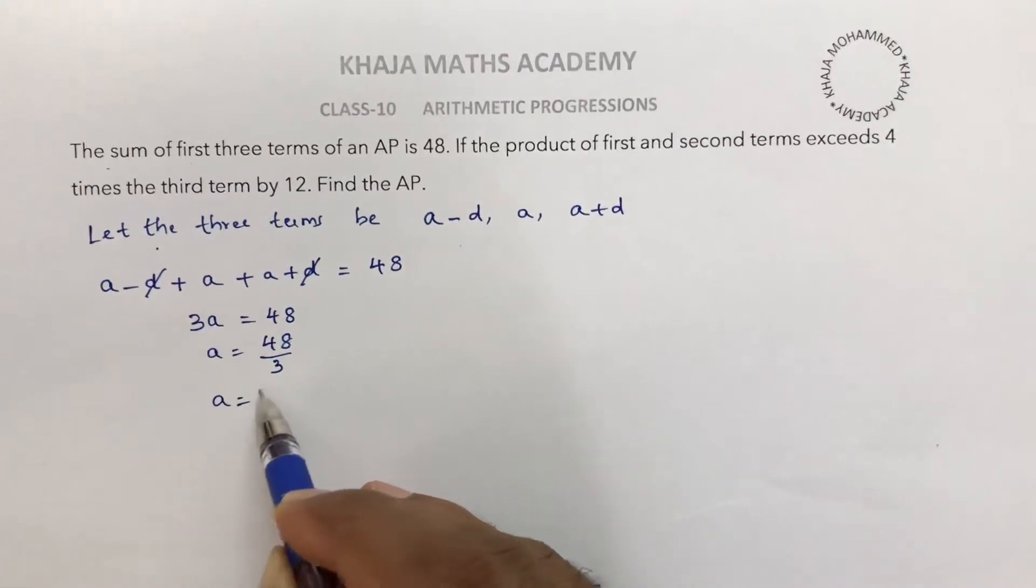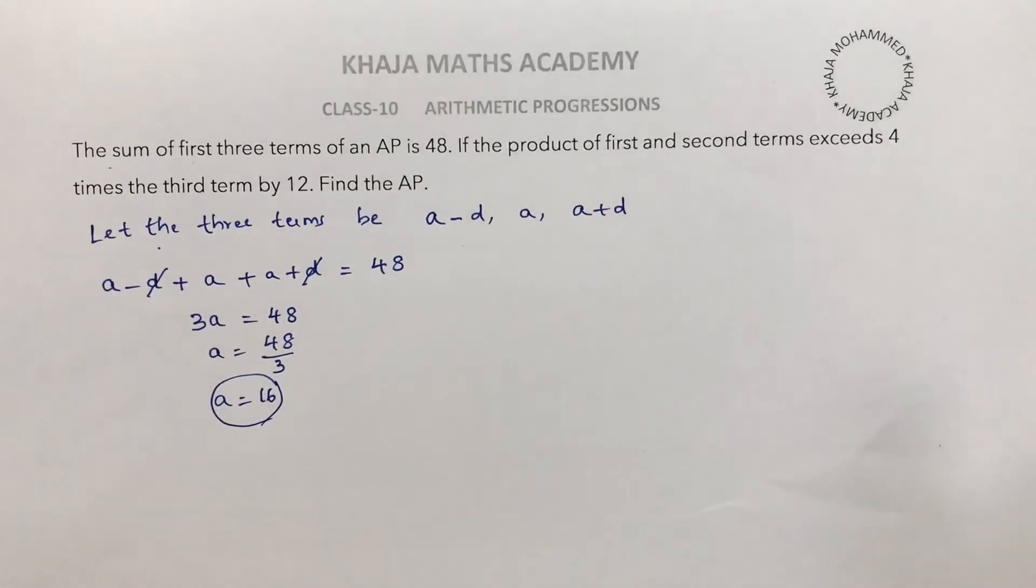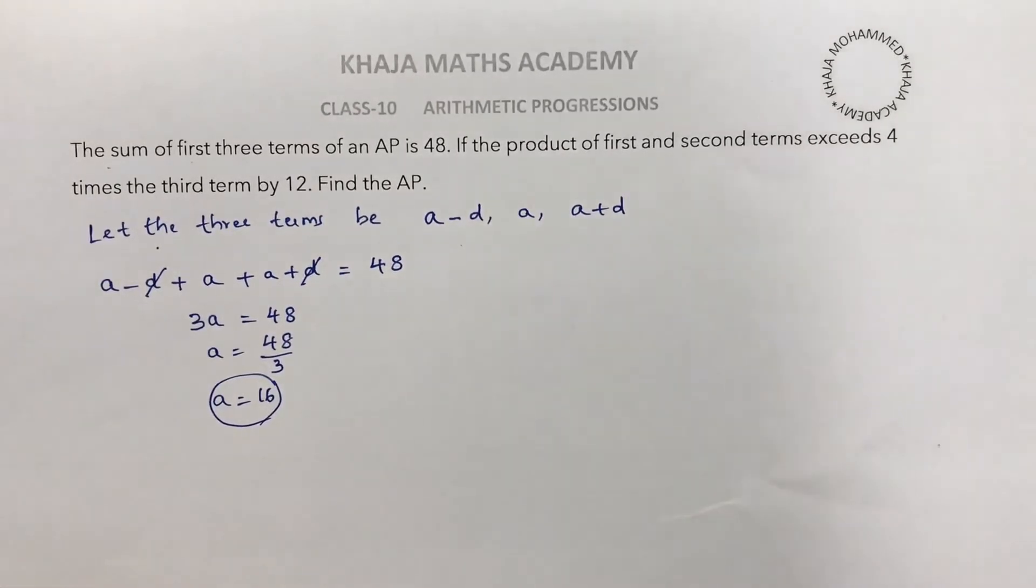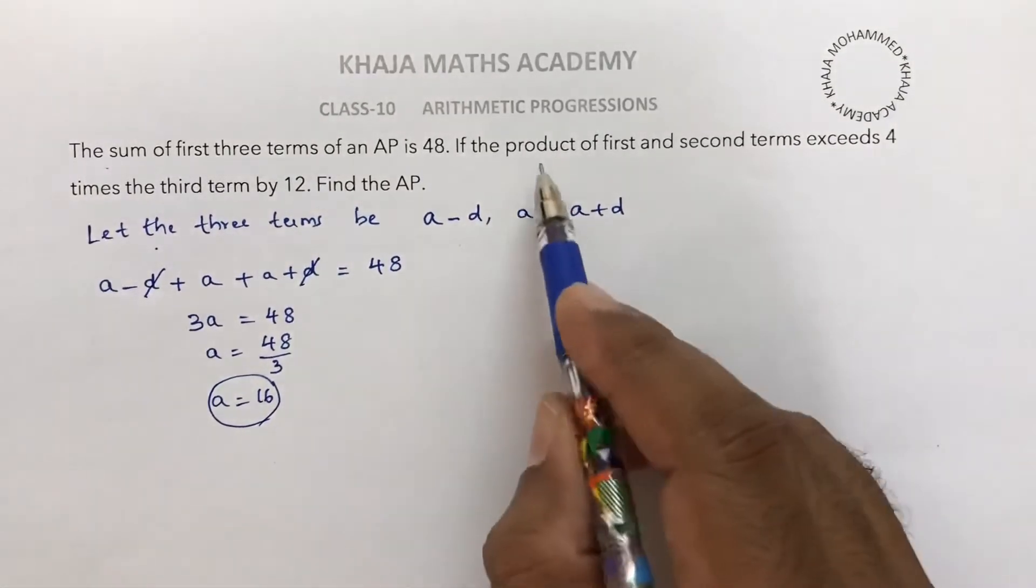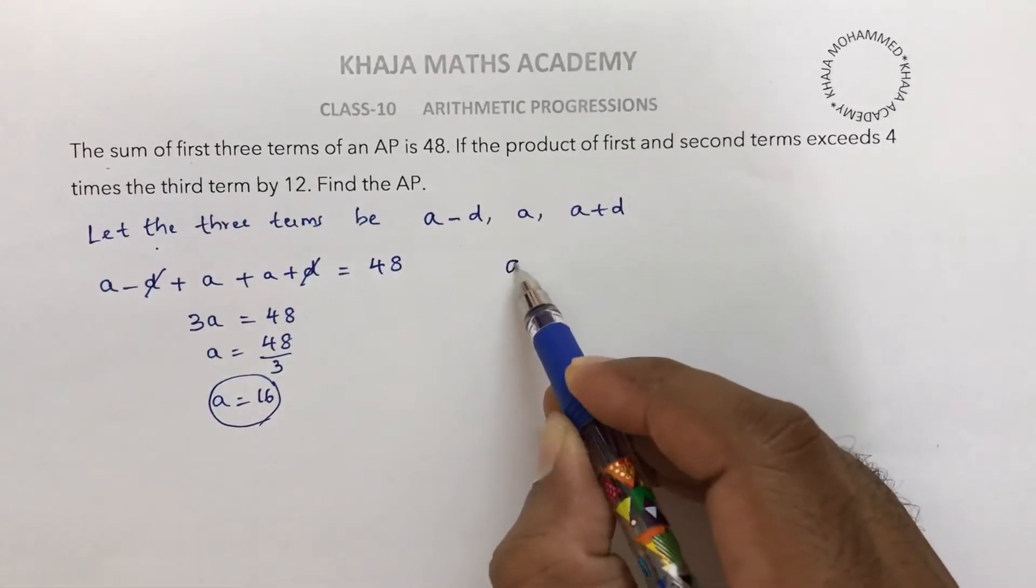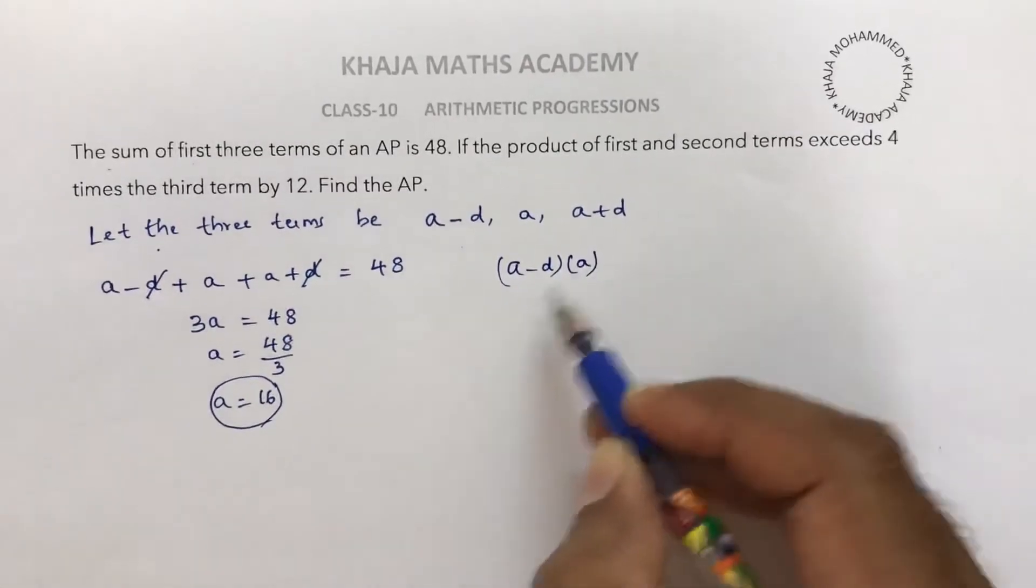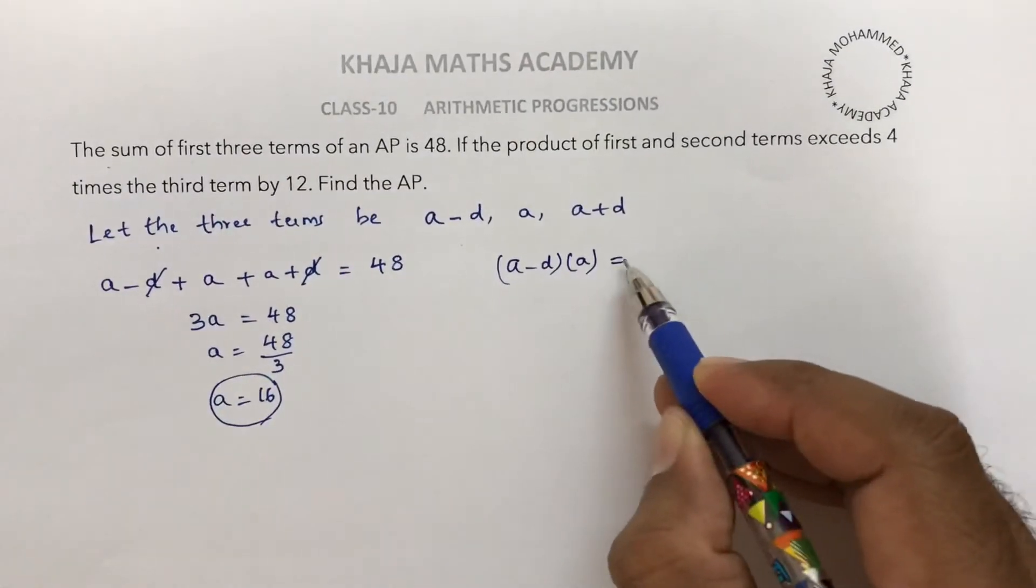The value of a is 16. Now, the product of first and second terms: the first term is a-d, second term is a, which exceeds four times the third term...